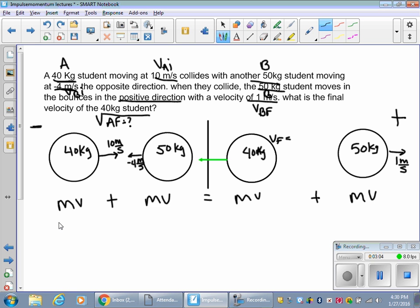Okay, what was my M? 40. What was my V? 10. What was my M? 50. What was my V? Negative 4. My V? I don't know, right? My mass is 40. My M? 50. Where am I getting this from? I'm getting it from the picture. And my velocity? 1. Let's move this out of the way.